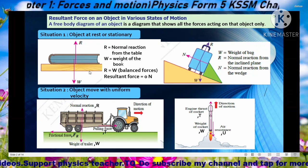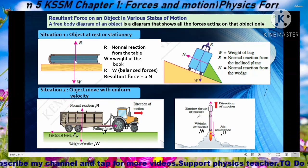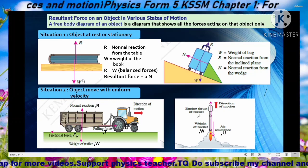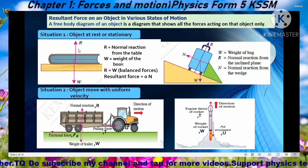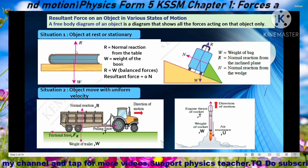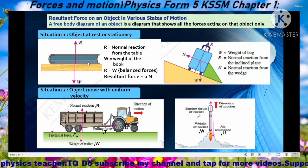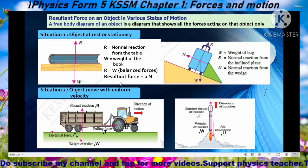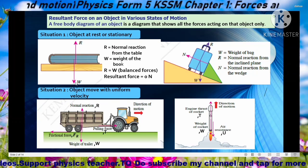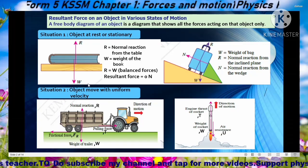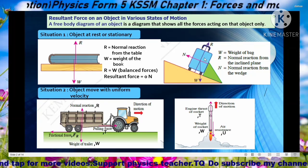Look at Situation 1: object at rest or stationary. Example is a book at rest on a table. The book is at rest on the table, so of course there is gravitational force — known as weight — directed downward, and also another force that balances the weight applied by the table on the book, called the normal reaction force. The book is at rest meaning forces are balanced, or we can say resultant force equals zero, so R equals W.